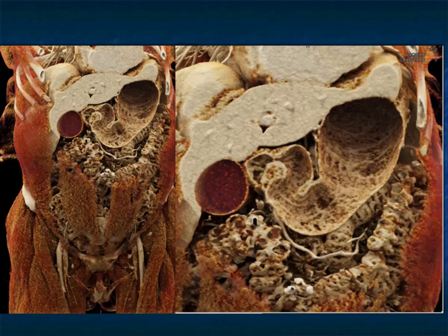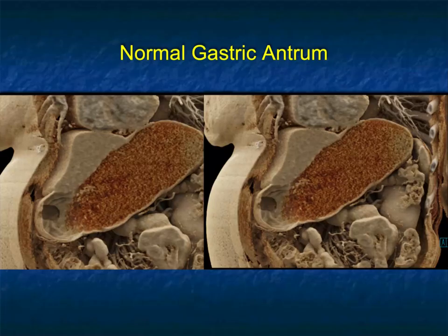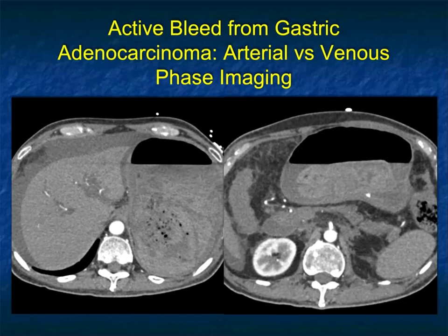The importance of technique cannot be overstated. When looking at the stomach, good distension is critical. To see a GI bleed, you need to distend the stomach. You don't want to use positive oral contrast — use water as a contrast agent. With cinematic rendering you can see beautiful detail whether looking at the fundus or down the antrum. Red represents fluid in the patient's stomach.